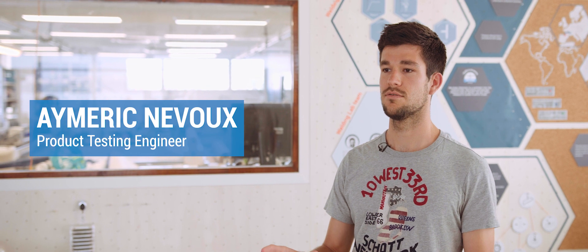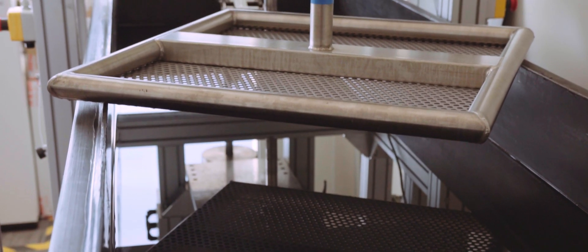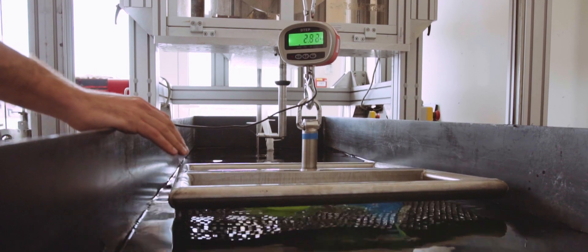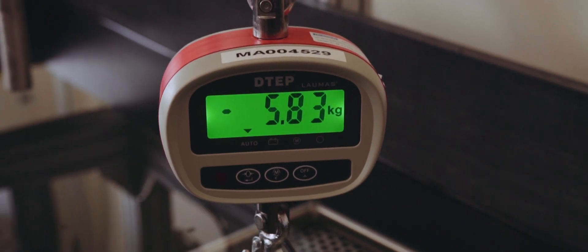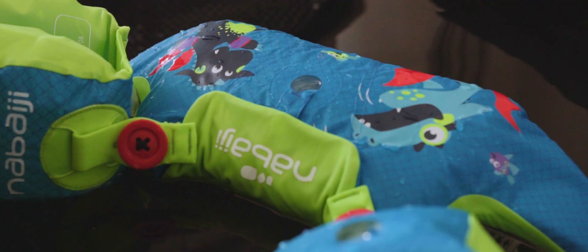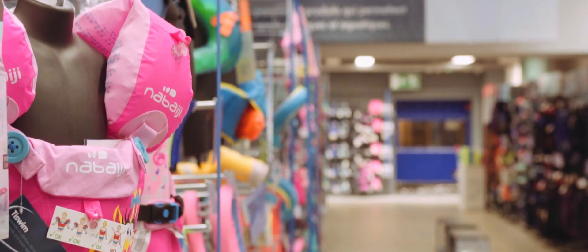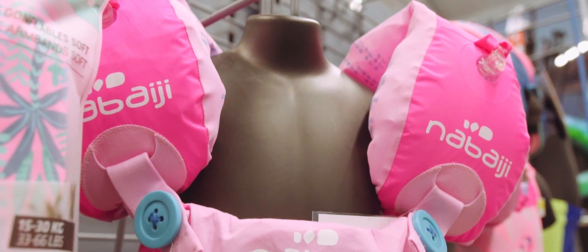We have a cage with a force measurer. We put the cage in the water. We put the products under. And the force measurer indicates how many kilos the product pushes. So we know the buoyancy of the product. And then we can certify that the product is okay for our children.